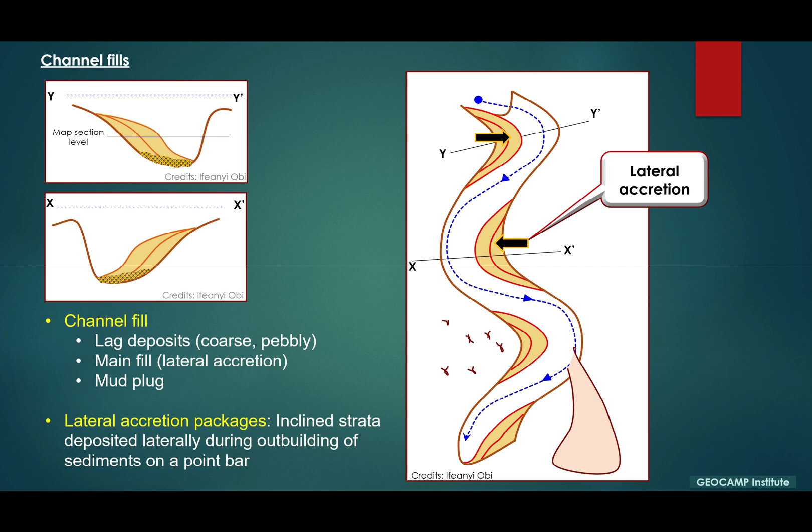Within the channel fill, there are three main components: the lag deposits, which are typically coarse and pebbly; the main fill, which in some cases shows evidence of cross bedding due to lateral migration or lateral accretion of the deposits within the channel fairway; and the mud plug, which are typically late stage deposits, very fine muddy units, signifying some form of abandonment or cessation of deposition of sediments in that channel fairway.